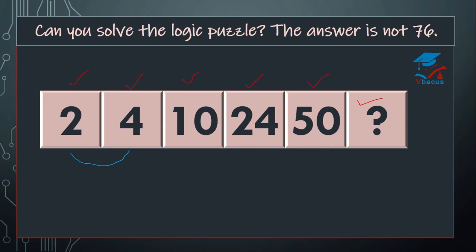Now see, what is the difference between 2 and 4? That is 2. Now difference of 4 and 10 is 6. Difference of 10 and 24 is 14. Difference of 24 and 50 is 26. Now, numbers are 2, 6, 14, and 26 and there is no clear pattern.